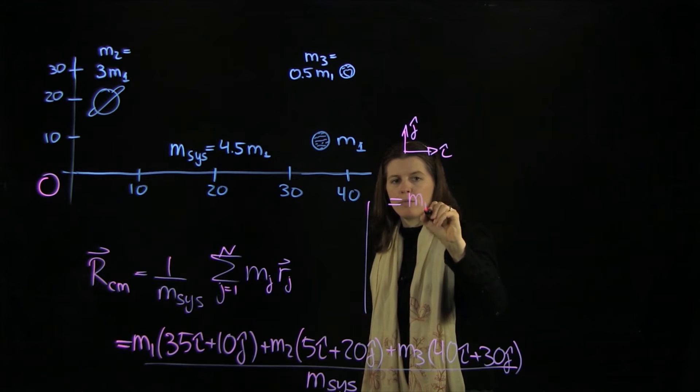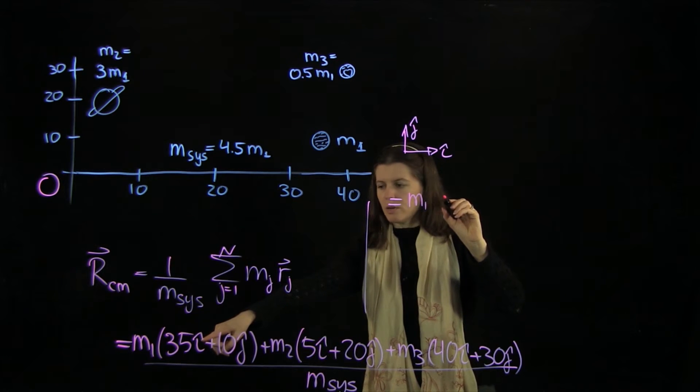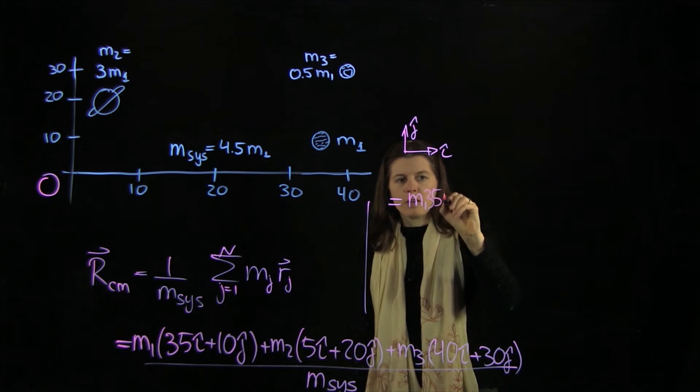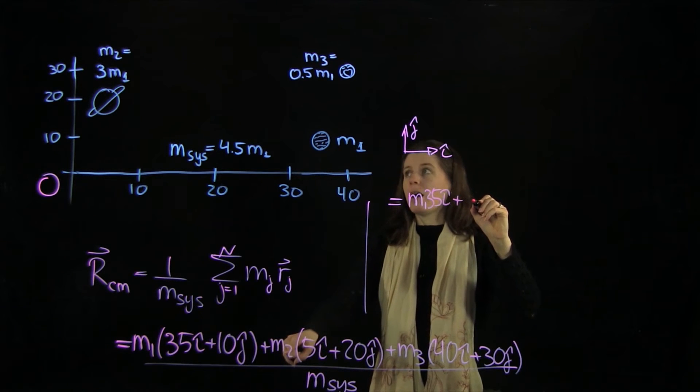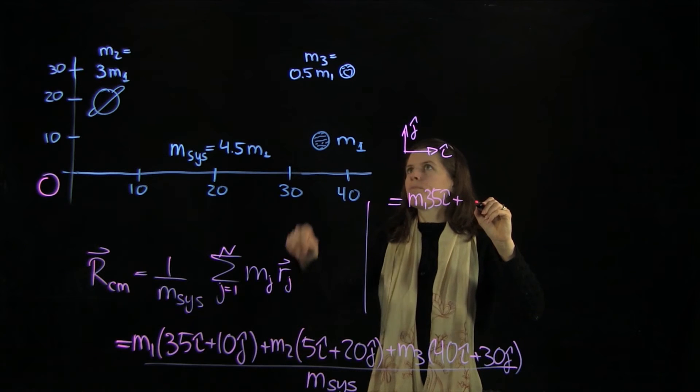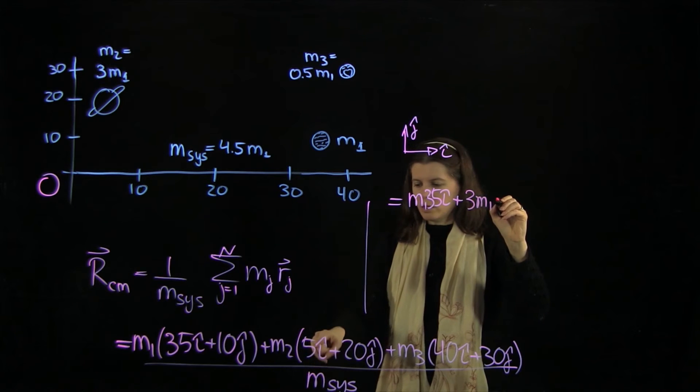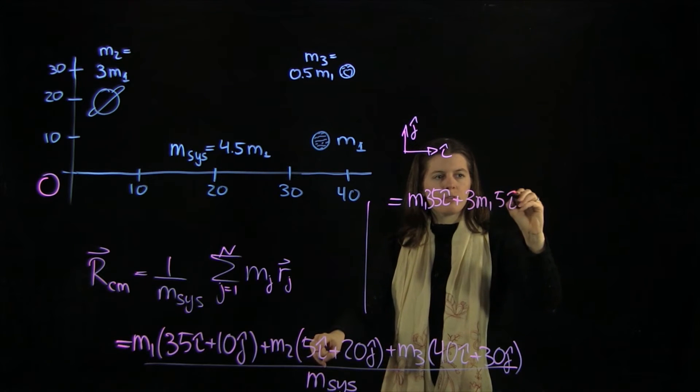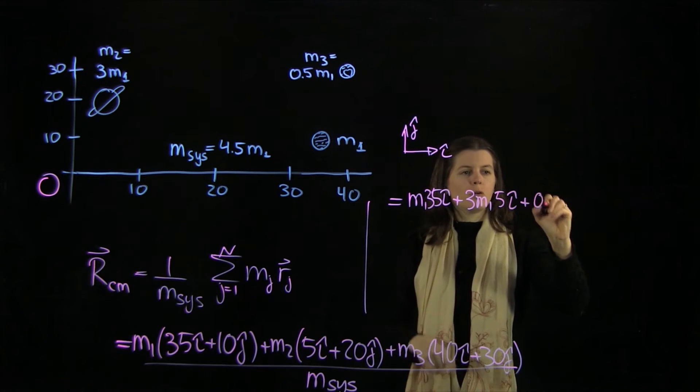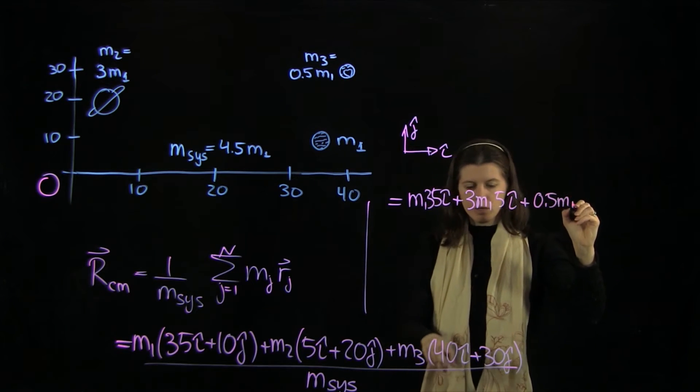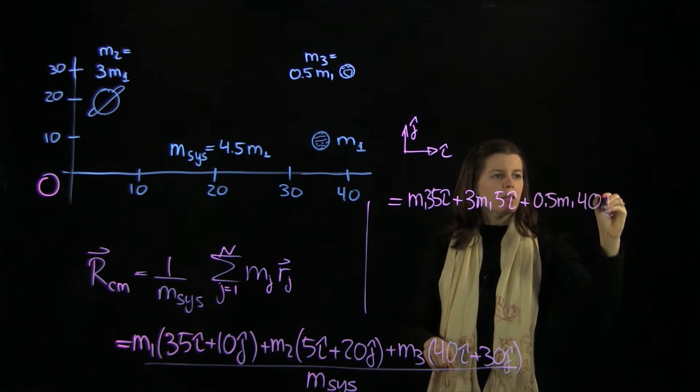We're going to have m1, and then we have 35 i-hat plus, here we're going to have half—m2, that is 3 m1—of 5 plus, and for m3 we have 0.5 m1 of 40. That's in the i-hat direction.